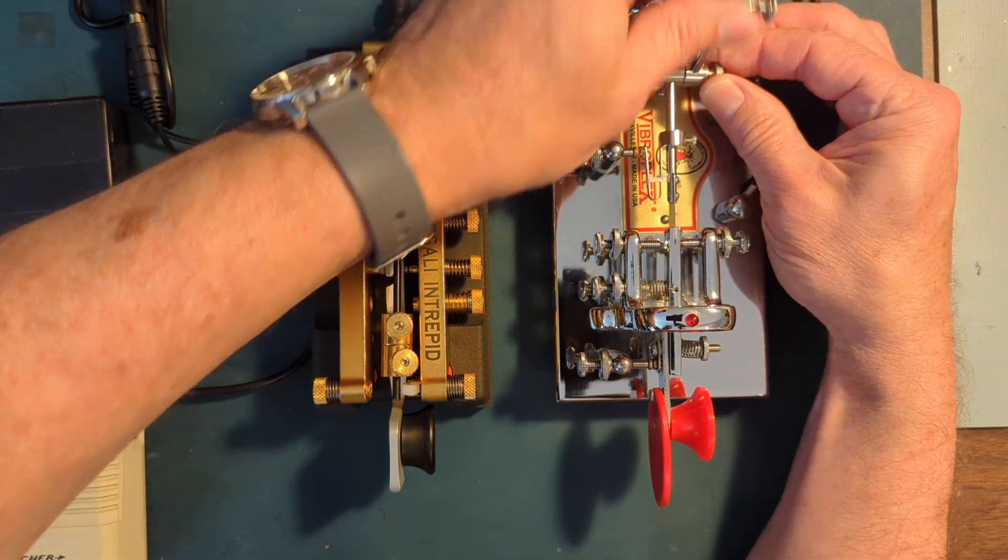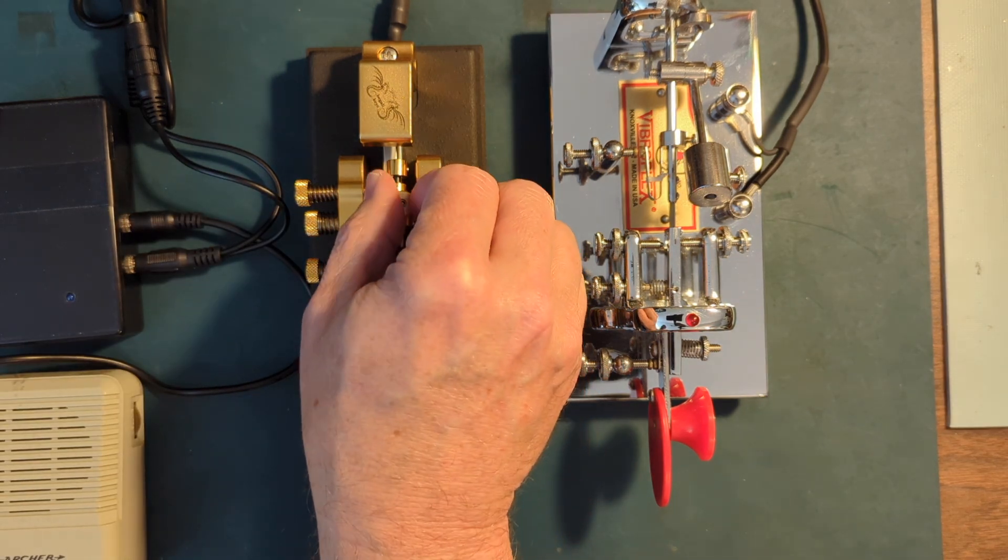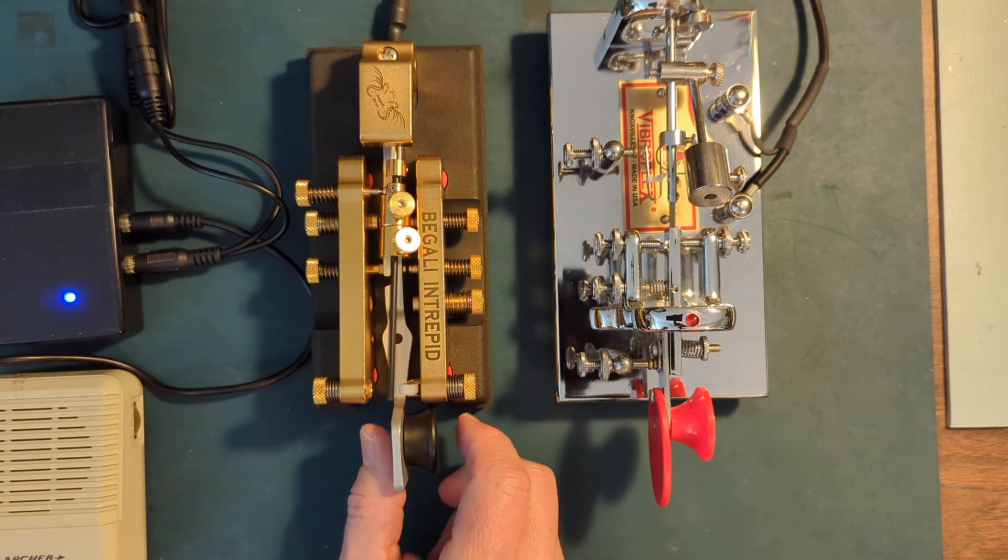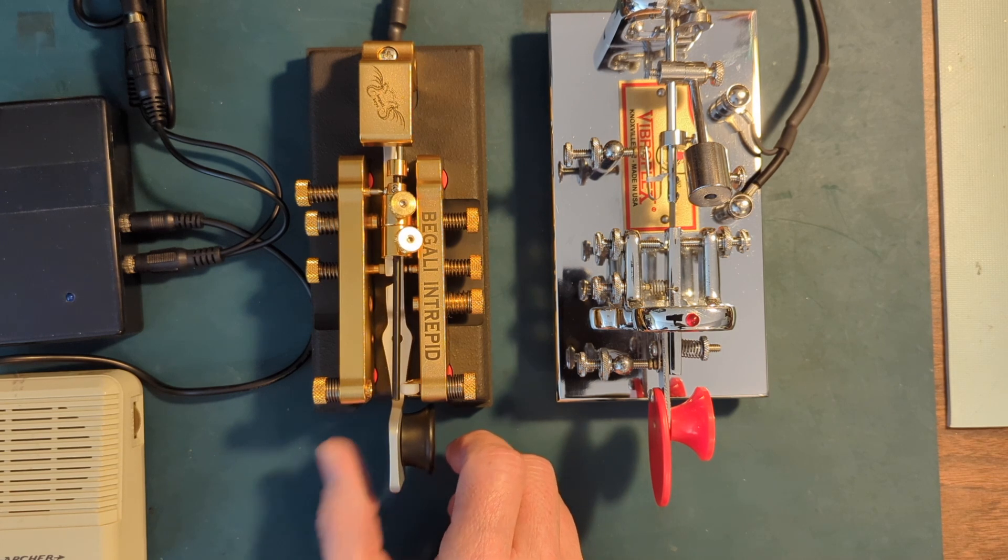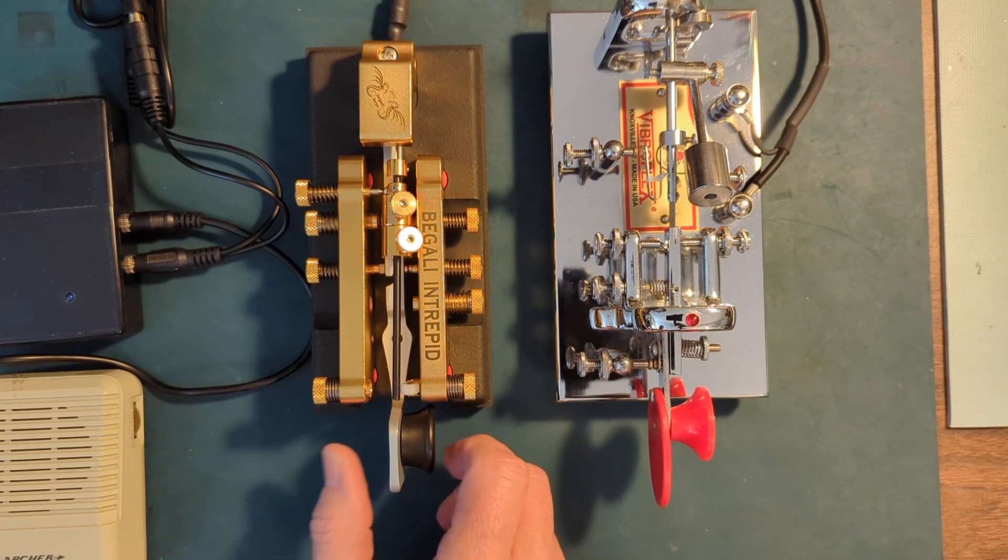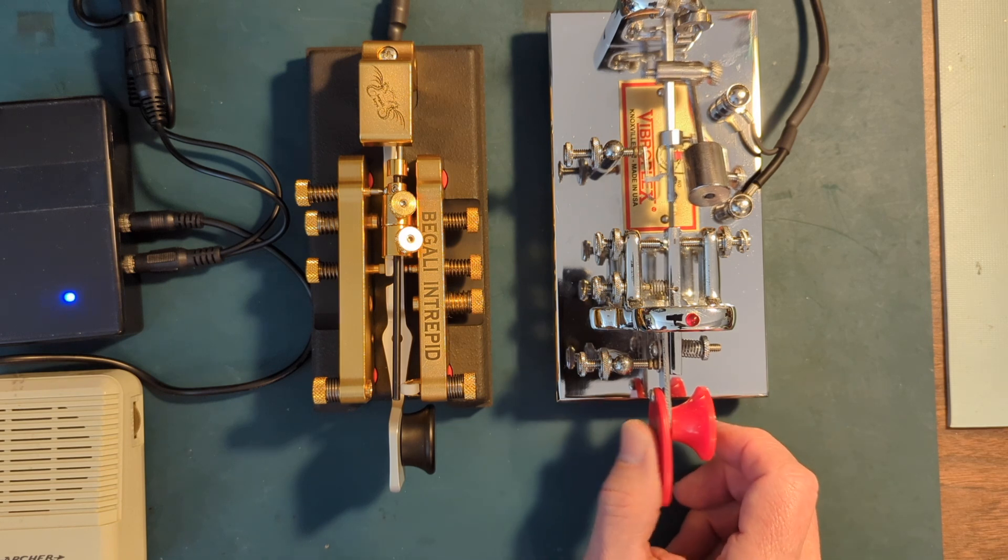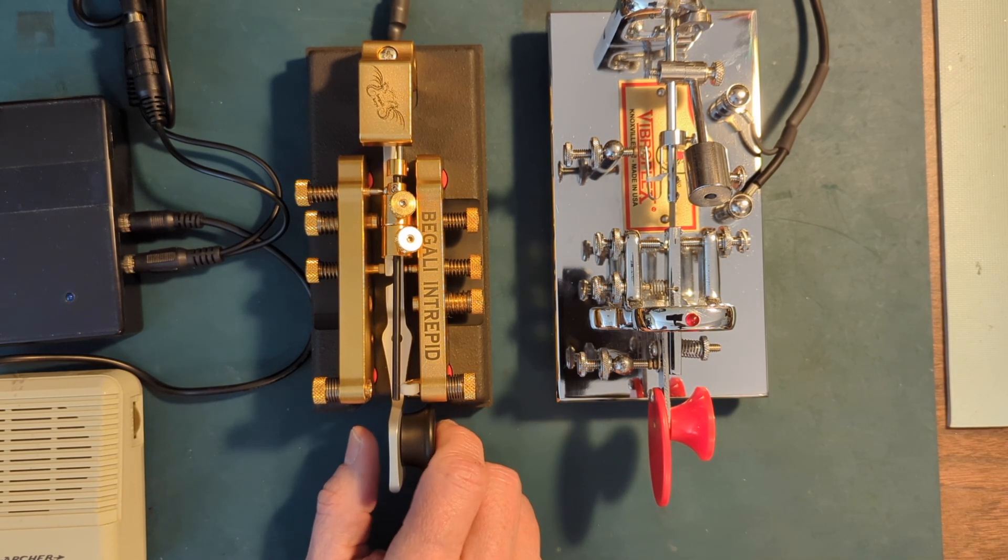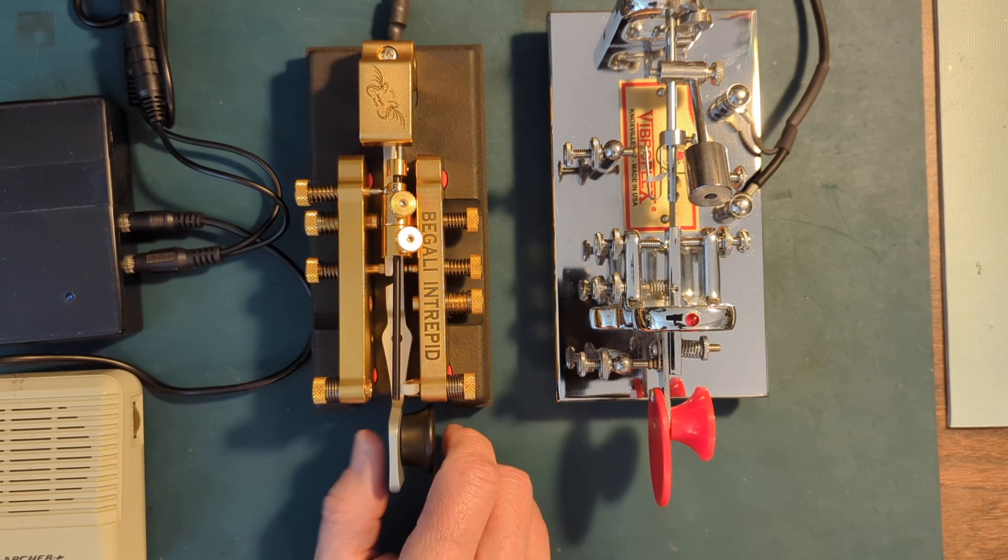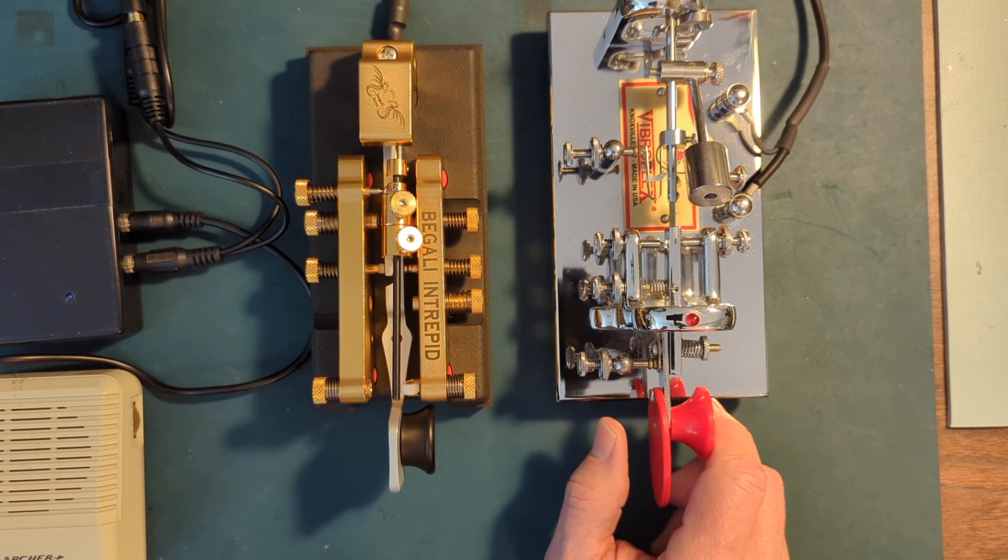Alright, so let's see how fast can we go here. I think the bug actually is a little bit faster. Let's move both of these back. Yeah, the bug is ultimately faster than the Begali. Now, I could take one of the Begali's weights off. If I just pulled it all the way off the arm, it would easily match the bug.